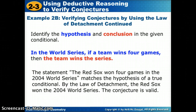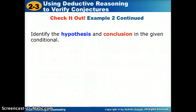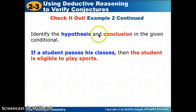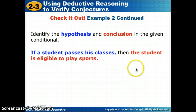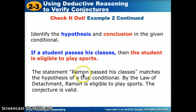Let's do one more with law of detachment. If a student passes his classes, the student is eligible to play sports. Ramon passed his classes. Is the conjecture — Ramon is eligible to play sports — valid by law of detachment? We identify the hypothesis: the student passes his classes, and the conclusion: the student is eligible to play sports. They told us Ramon passed his classes, so the hypothesis is true. Therefore, it is valid that Ramon is eligible to play sports.